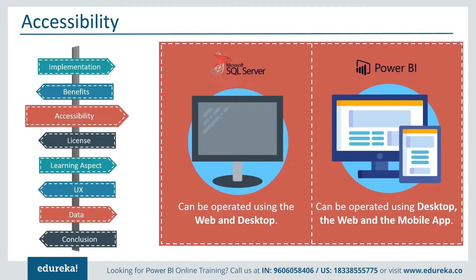Next, we have accessibility. The SQL Server Reporting Service, or SSRS, can be operated using the web and desktop, whereas Power BI can be used with the desktop, the web, and a mobile app. You can also generate a QR code from a report in Power BI, just in case you want limited people to have access to your reports.